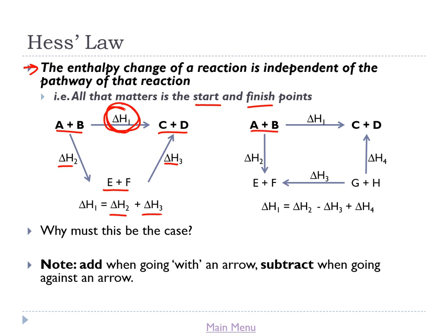It doesn't have to be just two steps — it could be three or more. Imagine A + B → E + F (ΔH2), and separately E + F can be produced from G + H (ΔH3), and G + H can turn into C + D (ΔH4). We could string that together to say ΔH1 = ΔH2 − ΔH3 + ΔH4. The minus sign is because with ΔH3 we're going against the arrow — when you go with an arrow you add, and when you go against an arrow you subtract, a bit like vectors in maths.